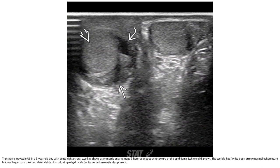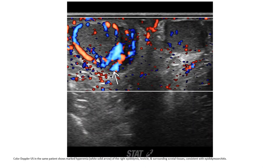Grayscale ultrasound in a 5-year-old boy shows left scrotal swelling. The epididymis is asymmetrically enlarged and heterogeneous in echotexture compared to the contralateral side. A small hydrocele is also present. In the same patient, color Doppler shows marked hyperemia of the right epididymis, testicle, and surrounding scrotal tissue, consistent with epididymal orchitis.